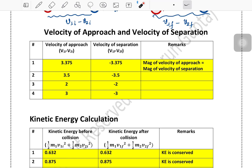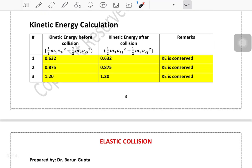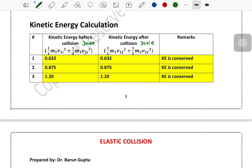Finally, calculate the kinetic energy. The formula is KE = ½m1·v1i² + ½m2·v2i² (before collision) and similarly after. We know all the masses and velocities, so plug them in and compute. Make sure to use joules as the unit. The two KE values — before and after — should be exactly the same, confirming that kinetic energy is conserved. This is the definition of elastic collision: a perfectly elastic collision.